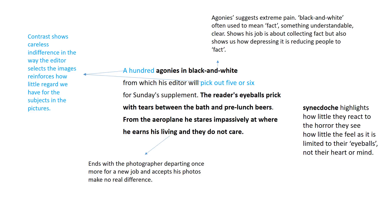The fourth stanza: 'A hundred agonies in black and white, from which his editor will pick out five or six for Sunday's supplement. The reader's eyeballs prick with tears between the bath and pre-lunch beers. From the aeroplane he stares impassively at where he earns his living and they do not care.' 'A hundred agonies' contrasted with picking out five or six shows a careless indifference in how the editor selects images, reinforcing how little regard we have for the subjects. Hundreds of people, hundreds of stories — and only five or six will be shown.